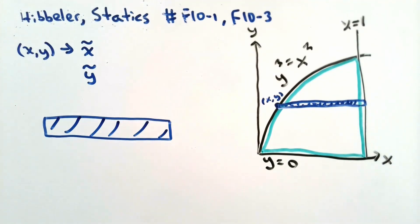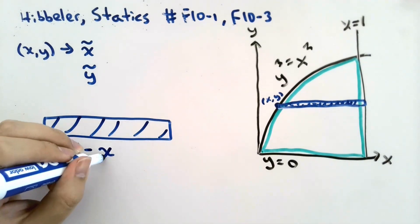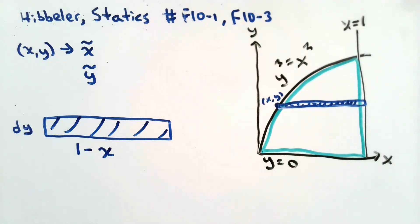My differentially small element will have a height of dy and a base width of 1 minus x. For this differentially small element, we can say that the area of the element, dA, is equal to the product of the base times the height.